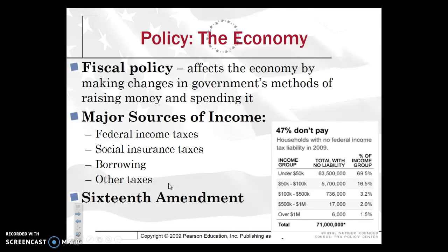Dealing specifically with fiscal policy, this refers to affecting the economy by making changes in the government's method of raising money through taxation and spending it. Major sources of income include federal income taxes, social insurance taxes, borrowing, and other miscellaneous taxes. If you've ever received a formal paycheck where you're supposed to get $500 a week but your take-home pay is only $300 a week, remember that a lot of that money is going to insurance programs and to the government to be spent.